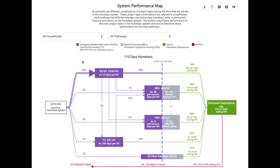First, let's take a look at the overall system map. At the top of the system performance map page, you can see two drop-down menus. The first looks at household category, and the second looks at service pathways. The default selections are all households and all pathways, which provides you with a whole system view.